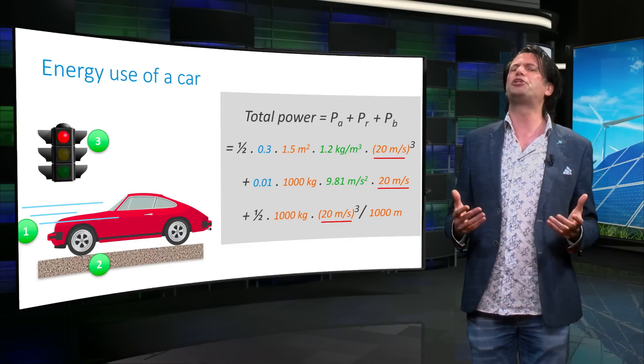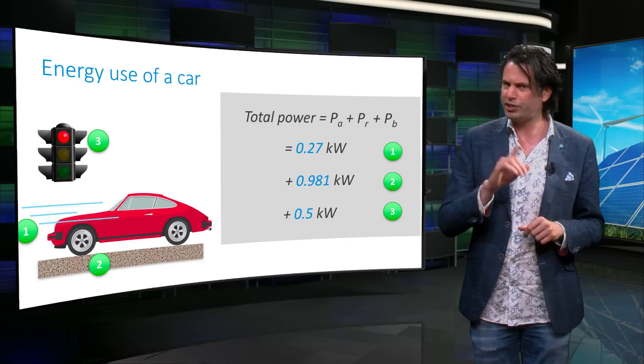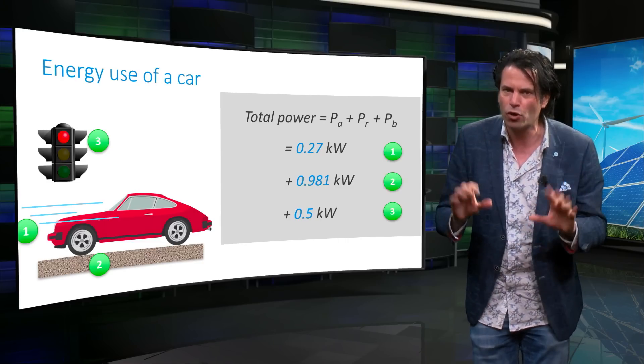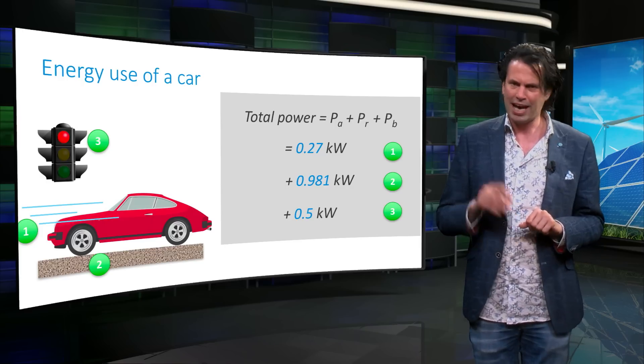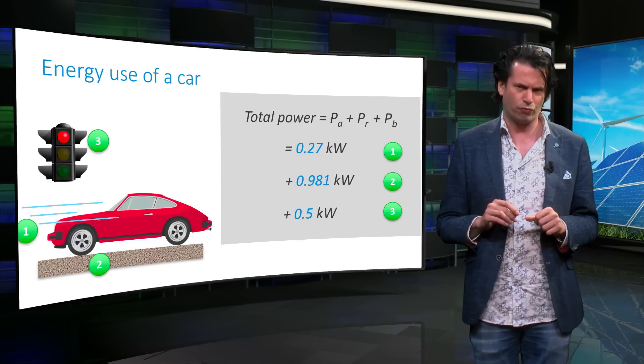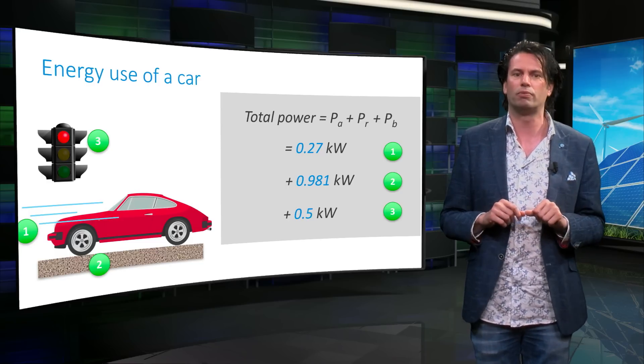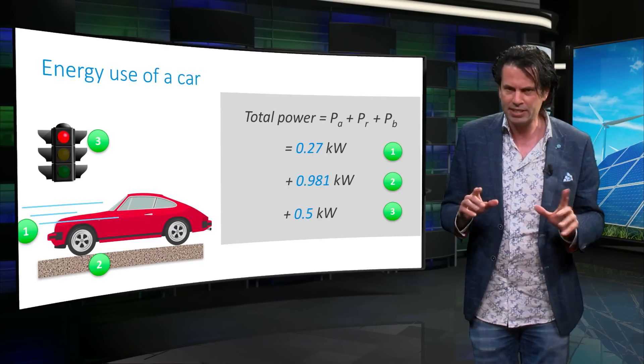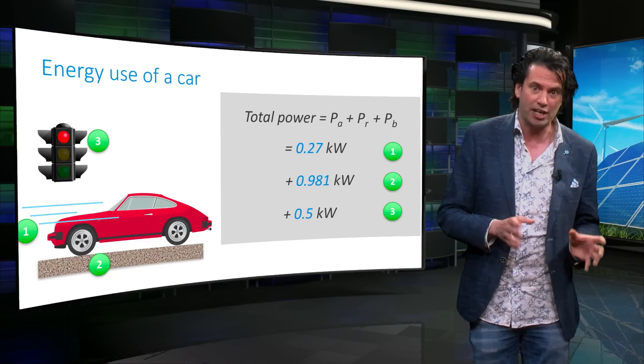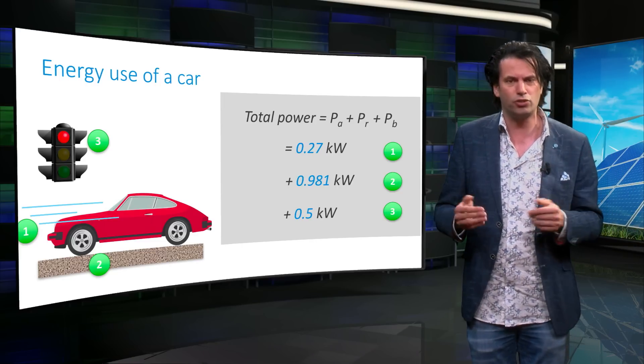Let us now reduce the speed of this car to 10 meters per second. The first thing we see is that all three resistances are much lower than the previous case. At 10 meters per second, the rolling resistance is now the dominant force, while the air resistance and braking power is lower. This means that the slower you drive, the less force is required to overcome air resistance, and the easier it is to brake.